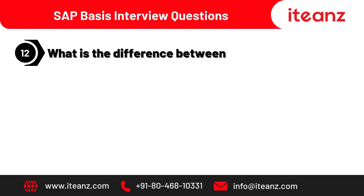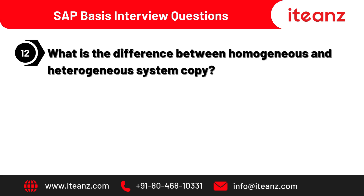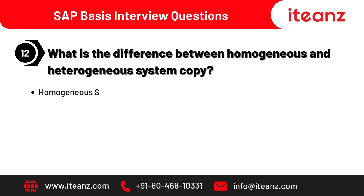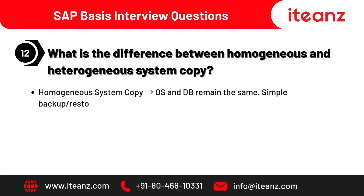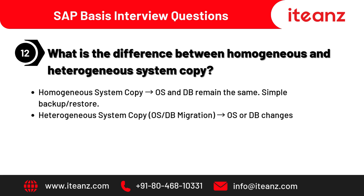What is the difference between homogeneous and heterogeneous system copy? Homogeneous system copy is where the OS and DB remain the same — a simple backup or restore. Heterogeneous system copy involves OS or DB migration, where one or both change. For example, migrating from Oracle to HANA requires SWPM plus R3load tools.